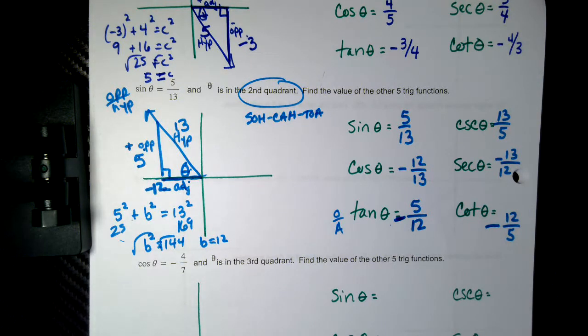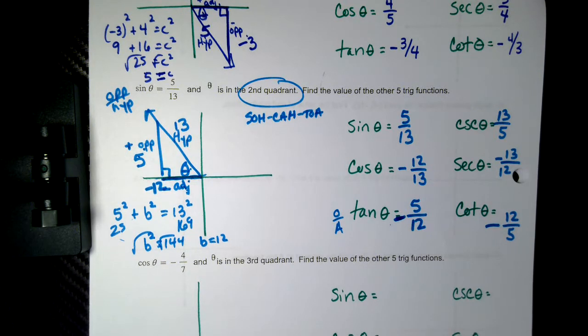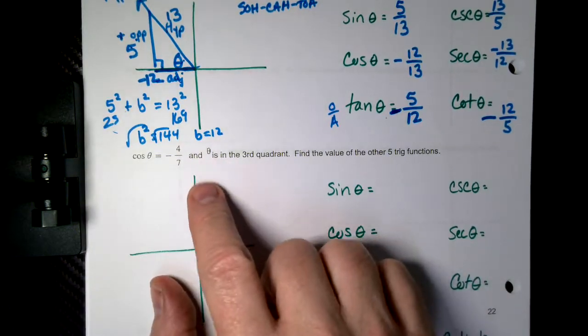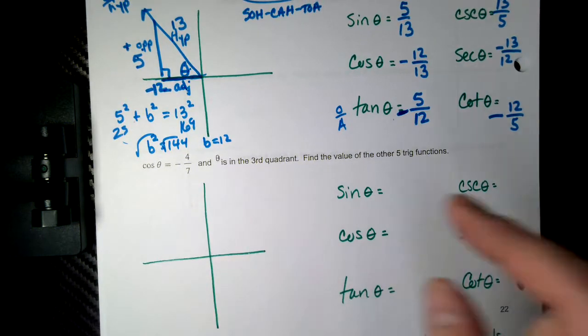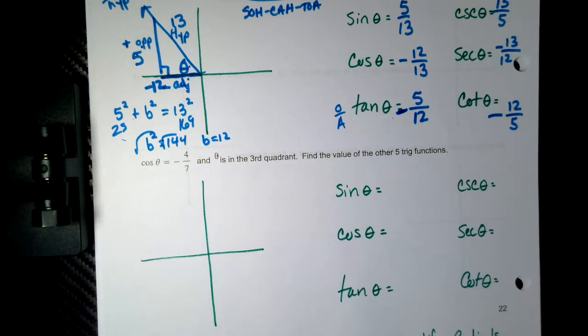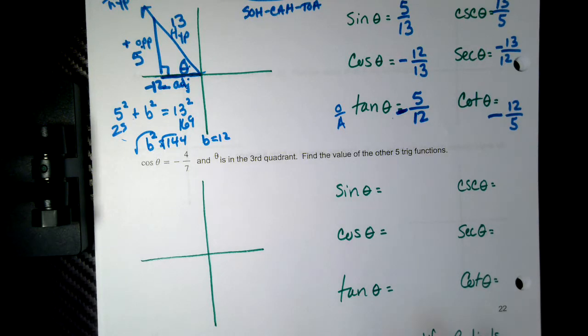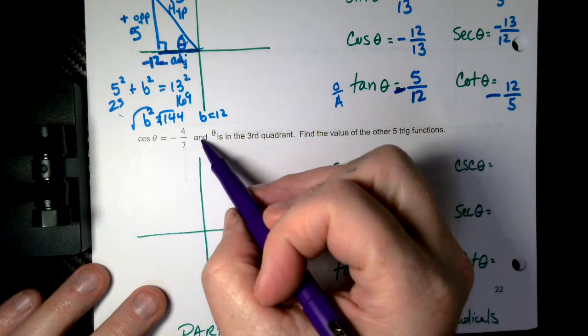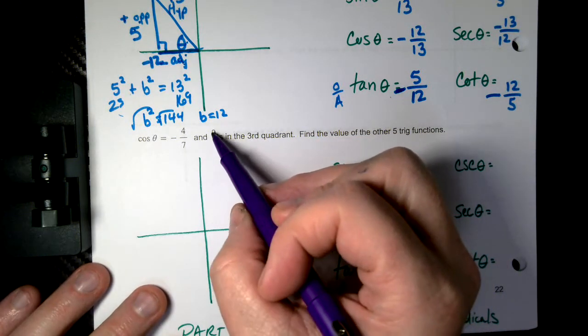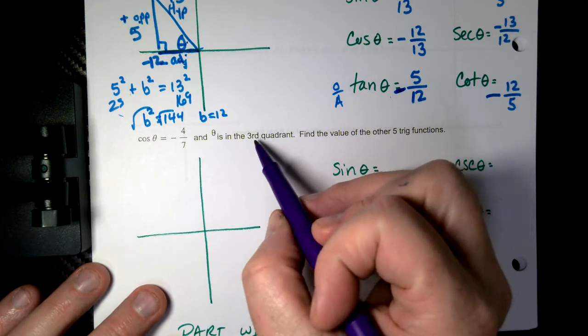All right. If you need a setup, pause your notes or pause the video for a minute. Set up your notes. Give it an xy axis. All right. So like the angles going around, sine, cosine, tangent and all that. Write those down. And we're ready to go. This time, the cosine is negative 4 over 7 and theta is in the third quadrant.